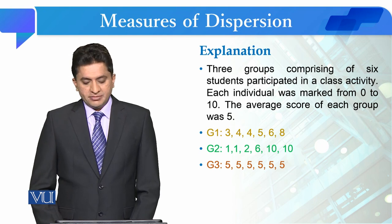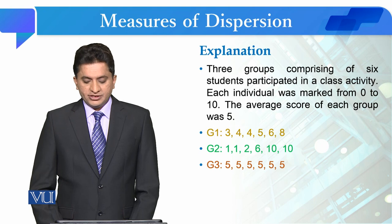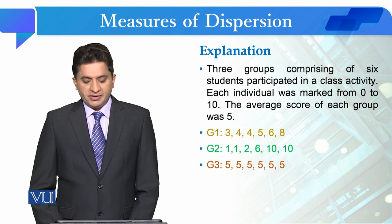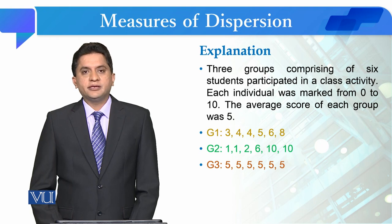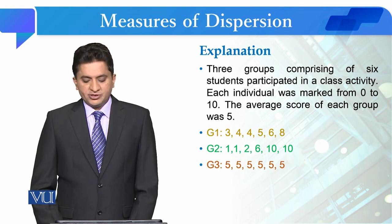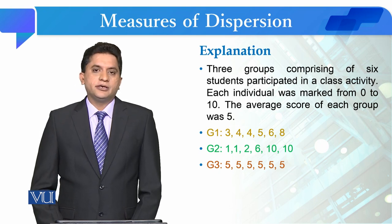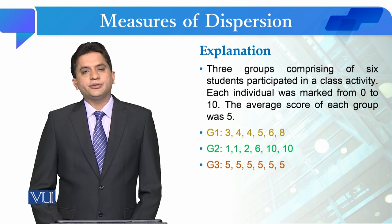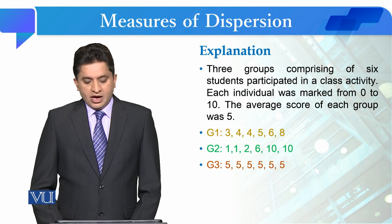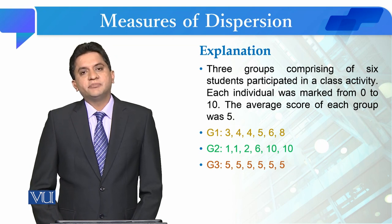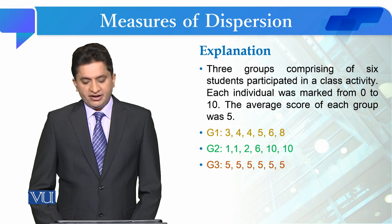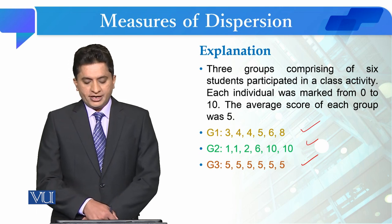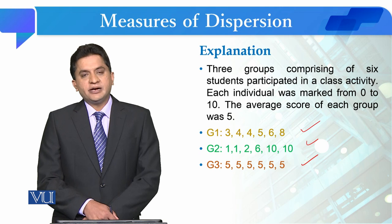In a class activity, there were 3 groups with 6 students each. They participated in class activity and performed. After that, the evaluator gave scores from 0 to 10. Now, in these 3 groups, the average score is 5. In group 1, group 2, and group 3, if we count the arithmetic mean, it is 5. When the arithmetic mean is 5...